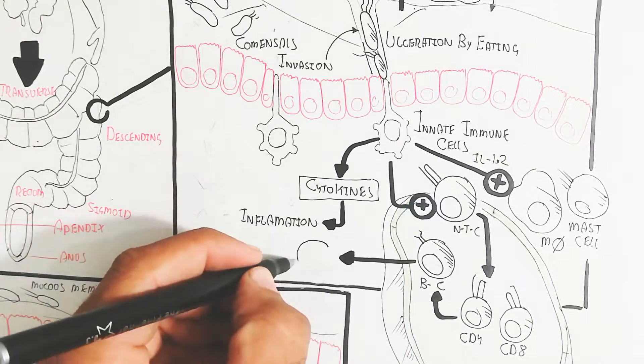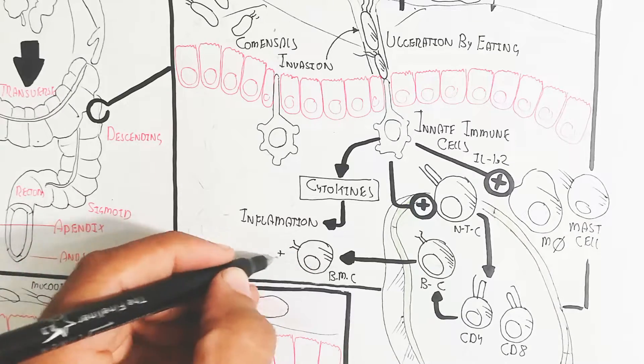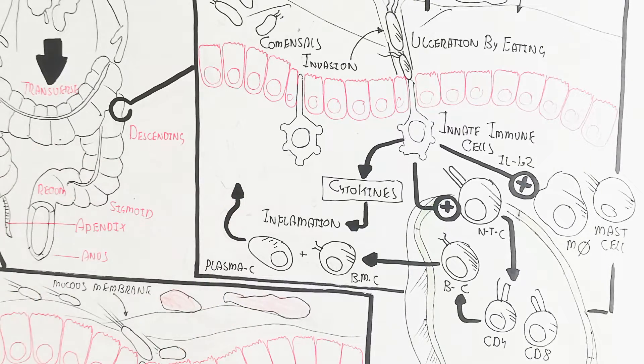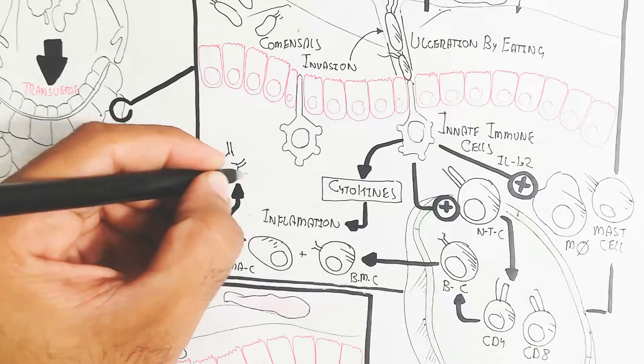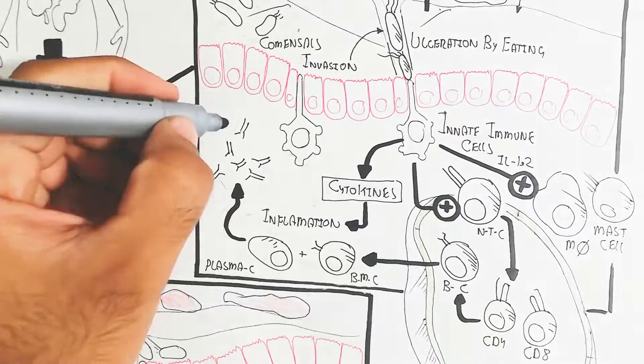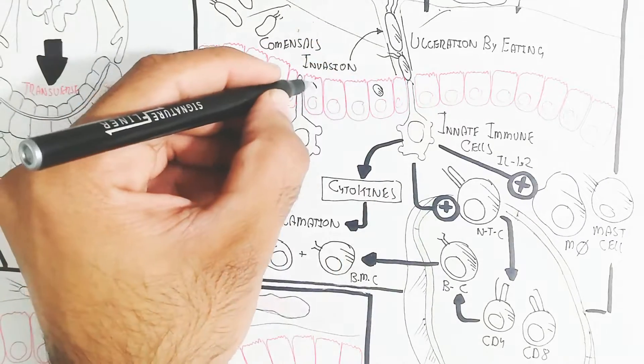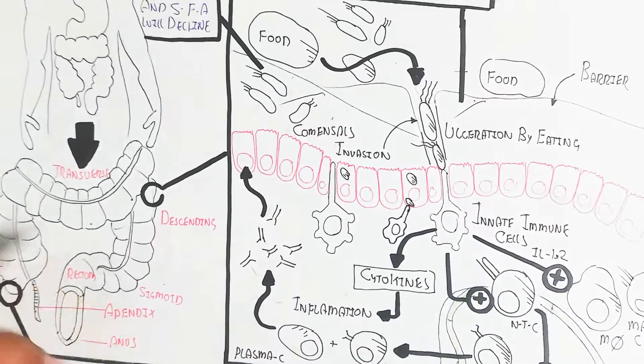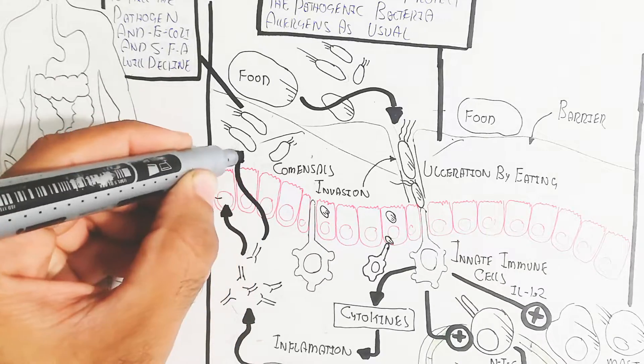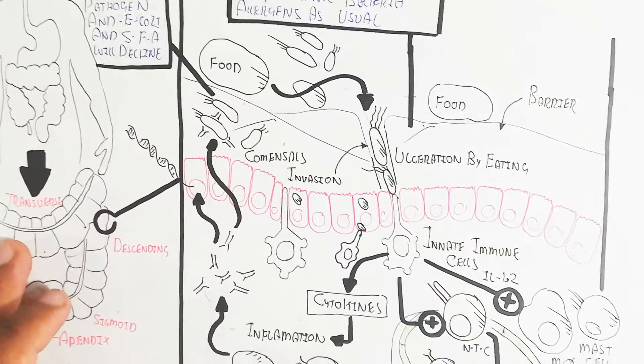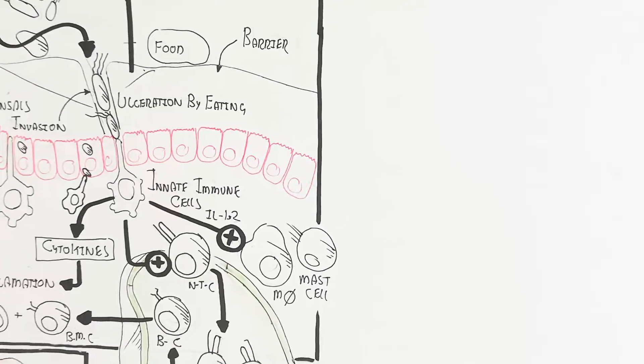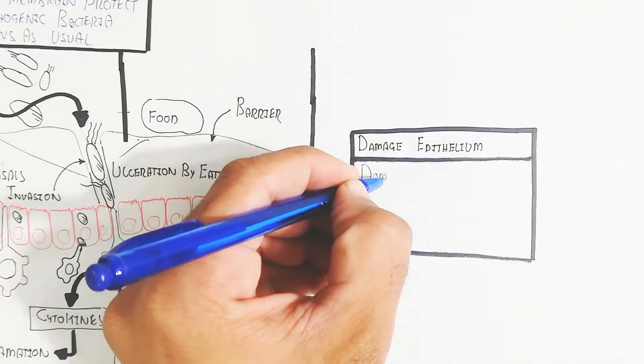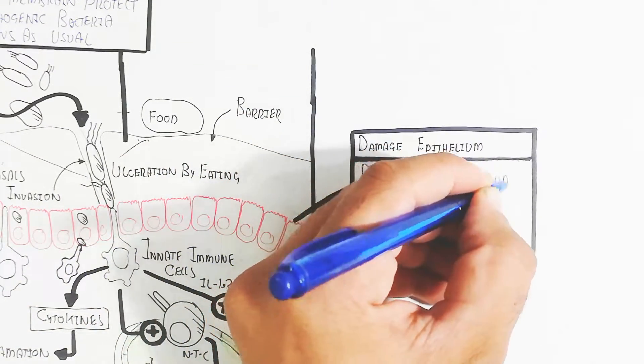The cytokines produced will increase inflammation because they are inflammatory mediators. The plasma cell produces antibodies. These antibodies are produced against antigens recognized through the dendritic cell antigen presenting cell, which is present in the epithelium between the epithelium, also known as the Langerhans cell. This is opsonization. The antigen-antibody immune complex formation leads to killing because the macrophage will eat it.